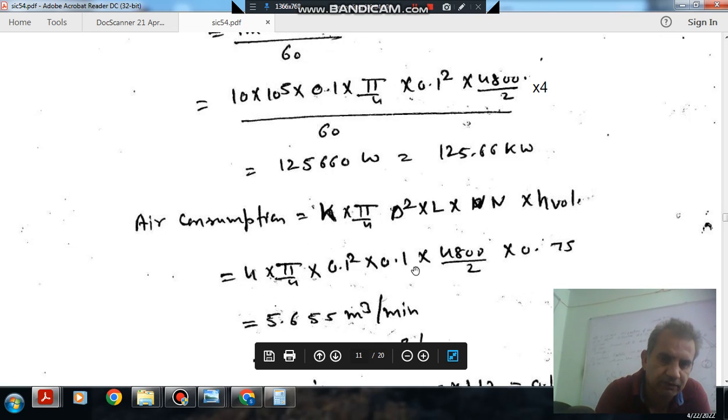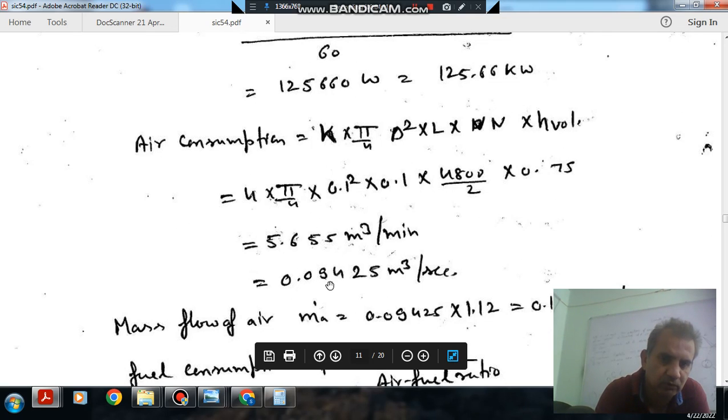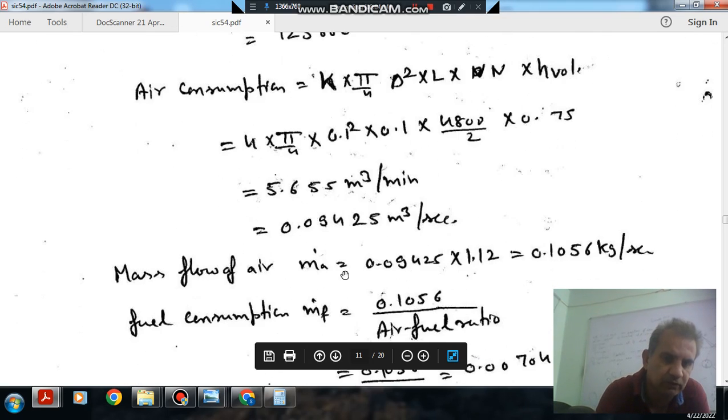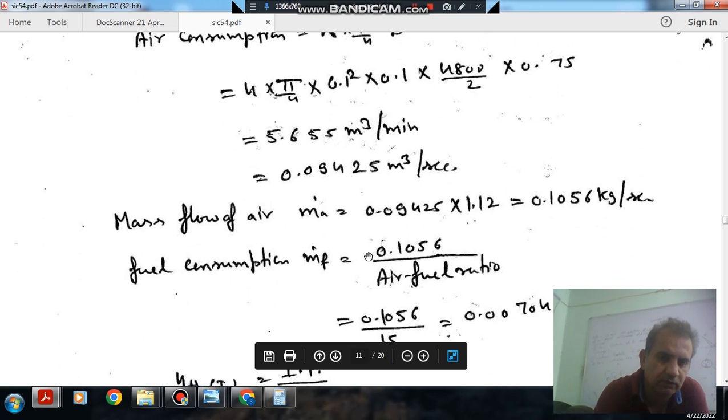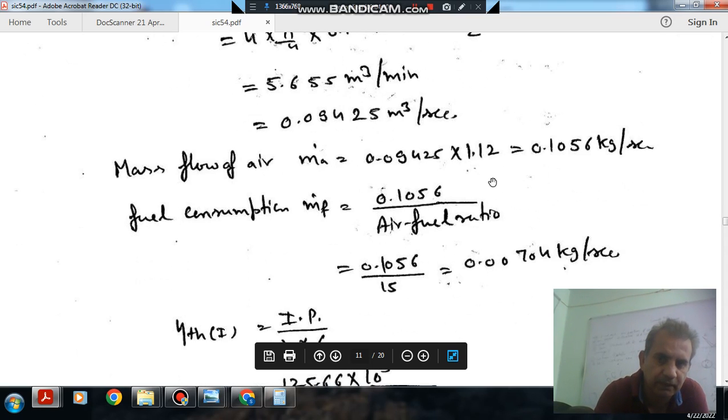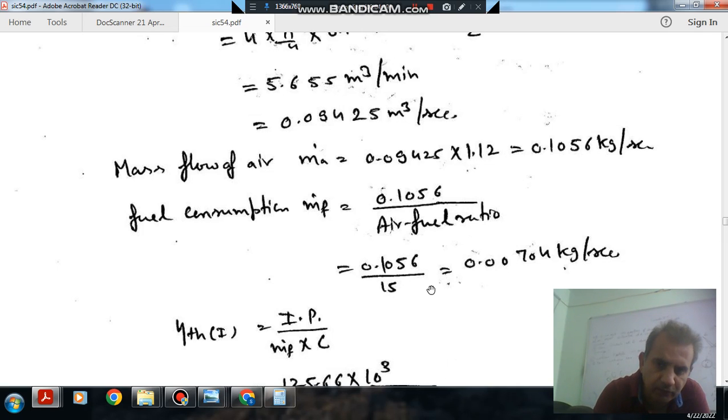Putting these values we get the air consumption of 0.09425 m³ per second. Mass flow of air, as density of air is given, can be calculated by multiplying with density: 0.1056 kg per second. Fuel consumption is 0.1056 by air-fuel ratio. This is your mass flow and air-fuel ratio is 15, so fuel will be mass of air by air-fuel ratio.